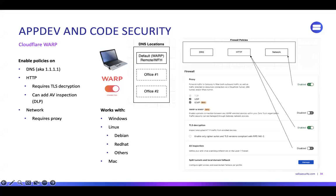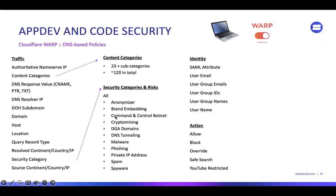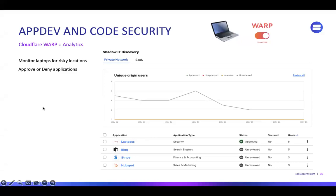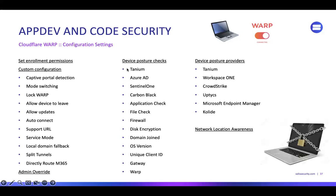Cloudflare Warp is what we use for that. Anyone here already using Warp at all? You can have policies based on Azure AD groups specific for your developers to see what they're doing and where they're going. And this is the shadow IT discovery of where they're going, and whether you want to approve them or not. We can even do device posture checks before they hop on networks. Very cool stuff — it works with a lot of different vendors.